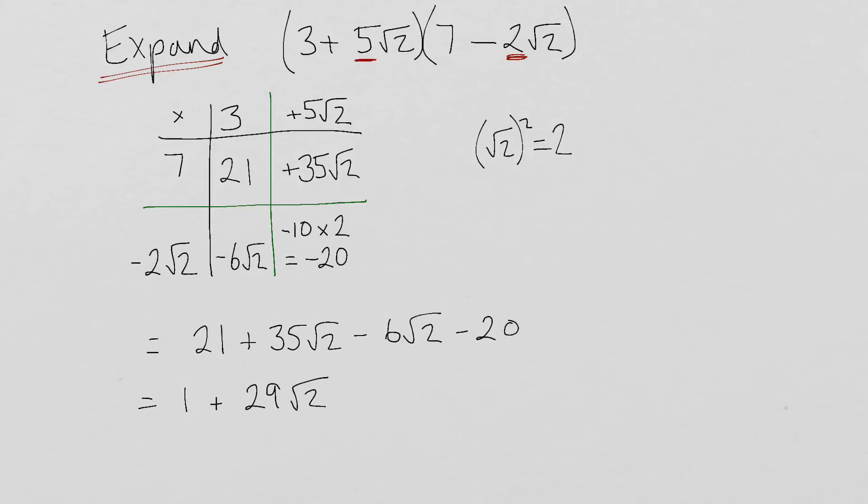So just if you are still finding that a little bit tricky, the reason I can't collect those is because obviously the number inside the square root is the same in both of those. If one was square root 2 and the other was square root 3 I couldn't have done that.